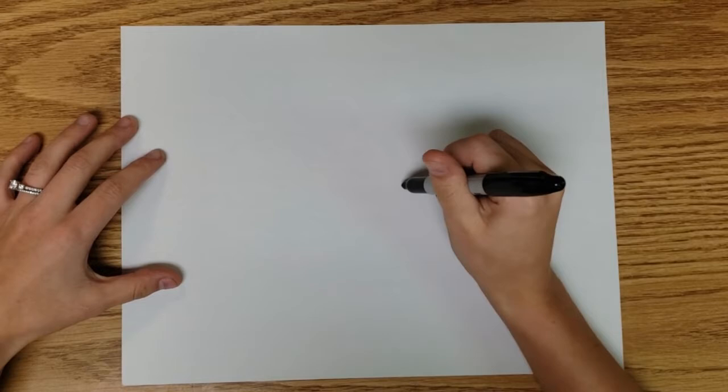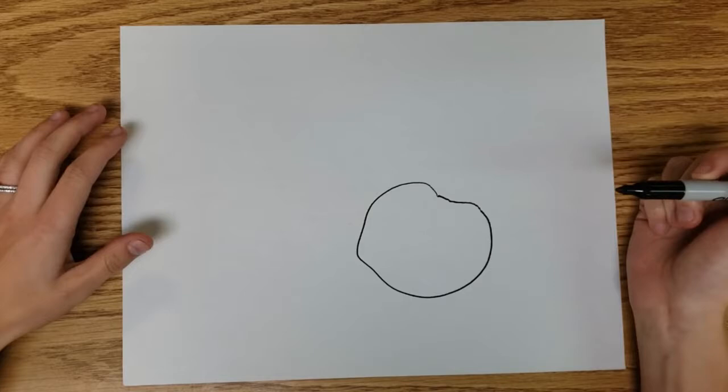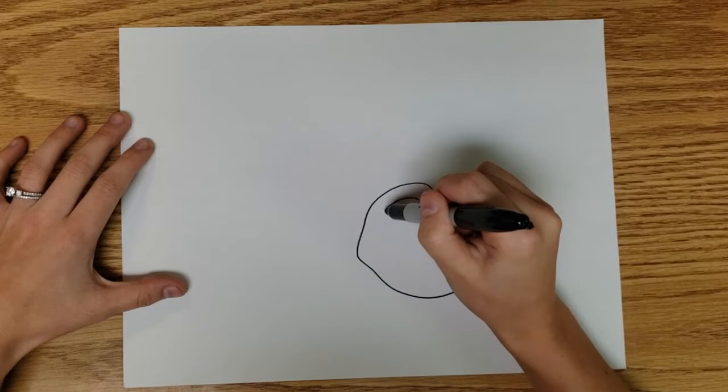But a general scoop of mashed potatoes starts with kind of a circular shape, so I would do that. Obviously this isn't perfect, right? It moves and does different things. So that's a good way to start.